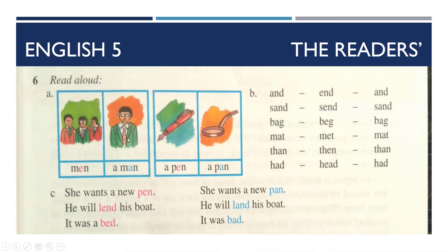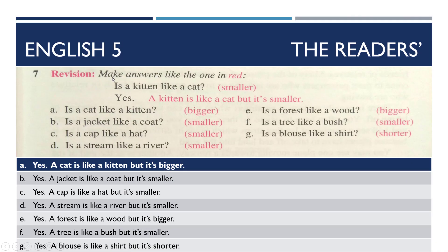Next, read aloud these words. آپ میرے ساتھ بولیں: men, a man; a pen, a pen; and, and, and; send, send; bag, bag; met, met; then, then; had, head, head. Next: 'He wants a new pen'; 'He will land his boat' — land; 'It was the bed'; 'She wants a new pen'; 'It was bad.'